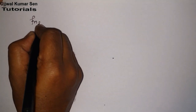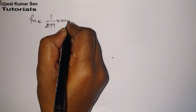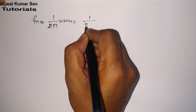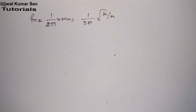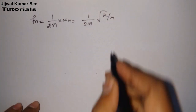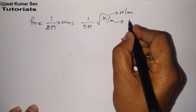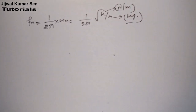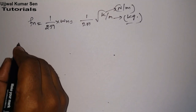Now let's go for the natural frequency, fn. fn is equal to 1 by 2π into omega n, so we can say fn = (1/2π) * √(k/m), where k is stiffness and m is mass. The unit of stiffness is Newton per meter and unit of mass is kg in SI units.